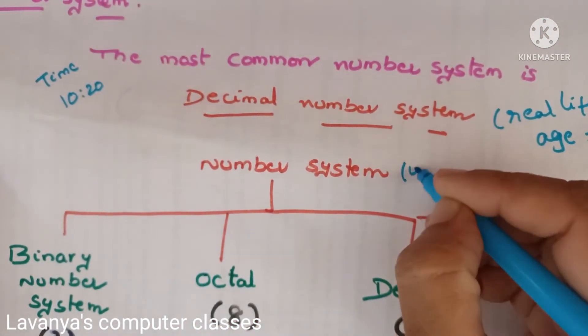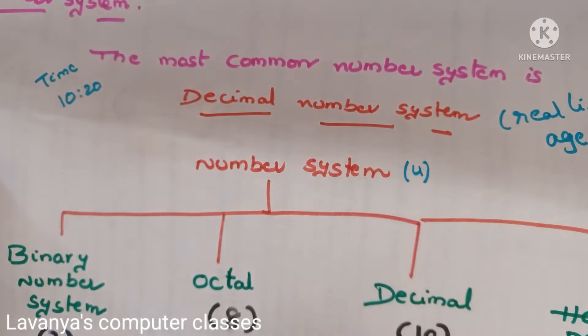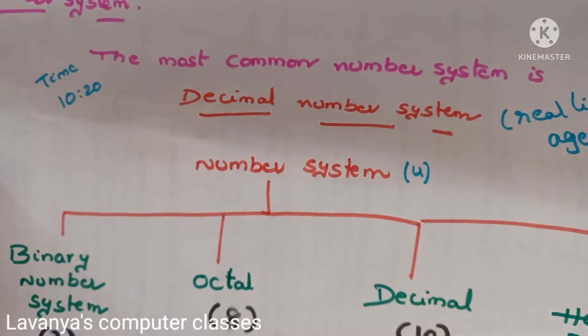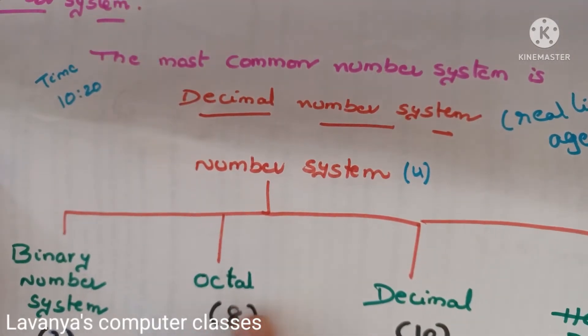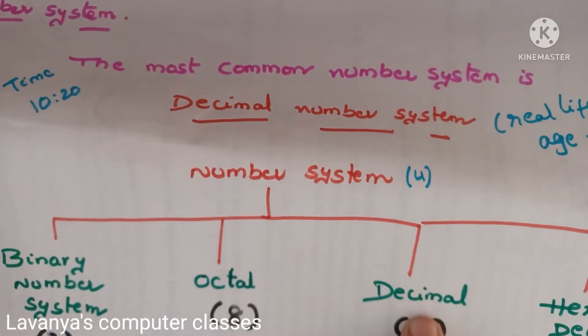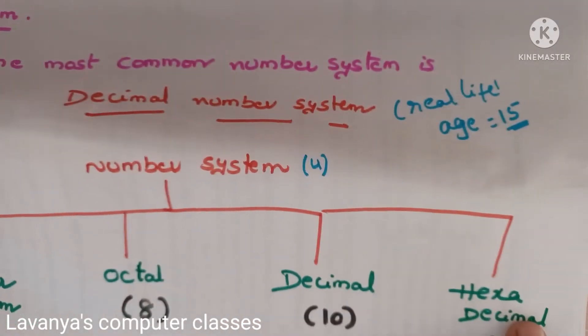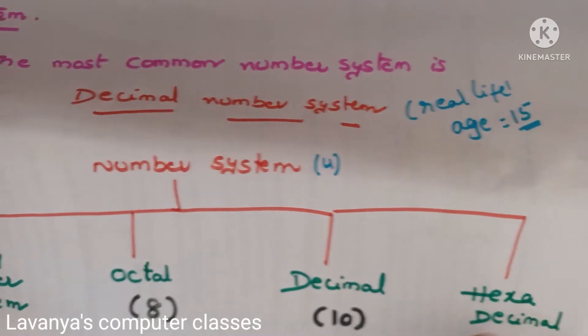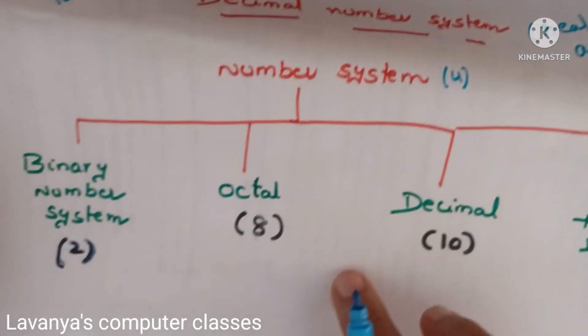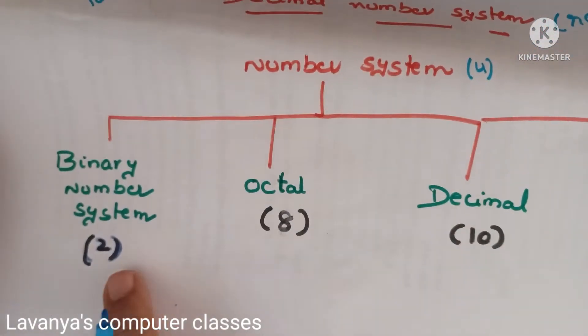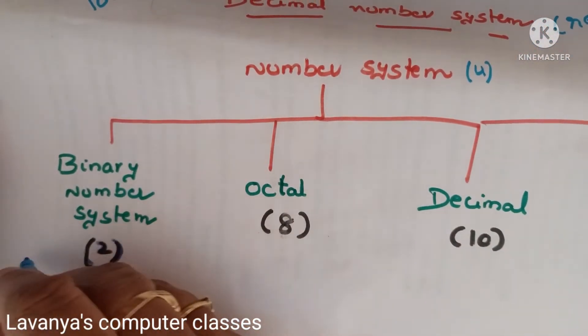So how many number systems do we have? There are totally four different types of number systems: the first one is the binary number system, then octal number system, decimal, and hexadecimal.